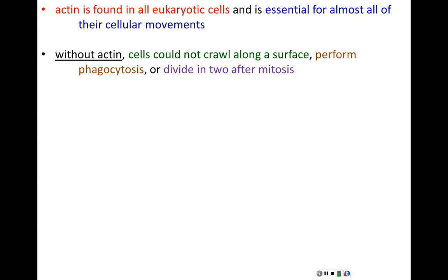Without actin, cells couldn't crawl along a surface like immune system cells do. They couldn't engulf anything, they couldn't eat anything. Cells couldn't divide after mitosis without actin — actin is what's responsible for cytokinesis. With the small exceptions of flagella and some cilia which are microtubule dependent, almost all cellular motion depends on actin.